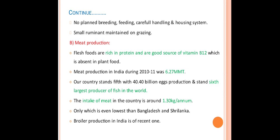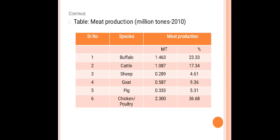The intake of meat in the country is around 1.30 kilograms per annum, which is even lower than Bangladesh and Sri Lanka. Broiler production in India is of recent origin. This chart shows meat production in various years starting from 2010.